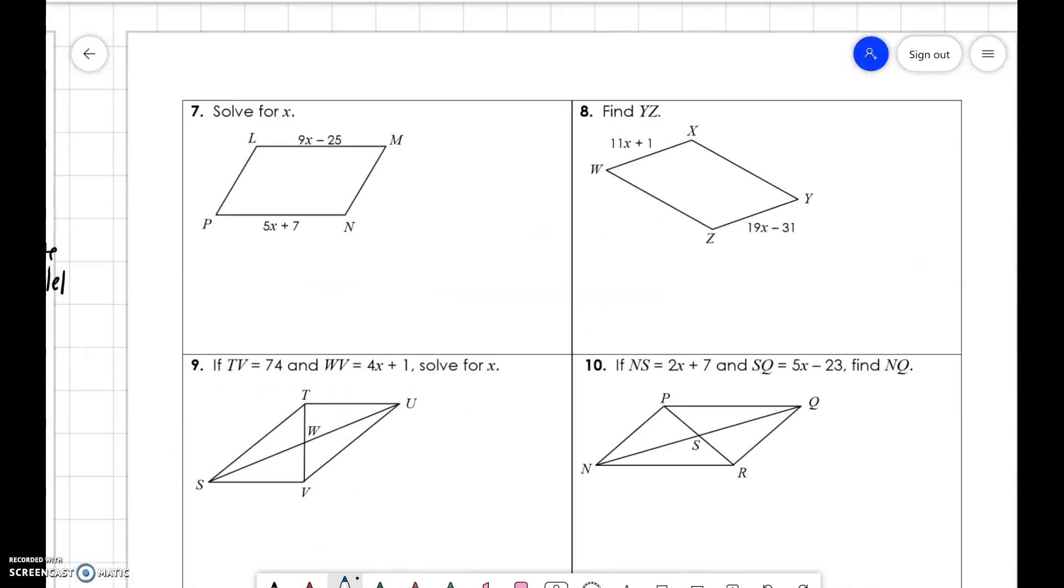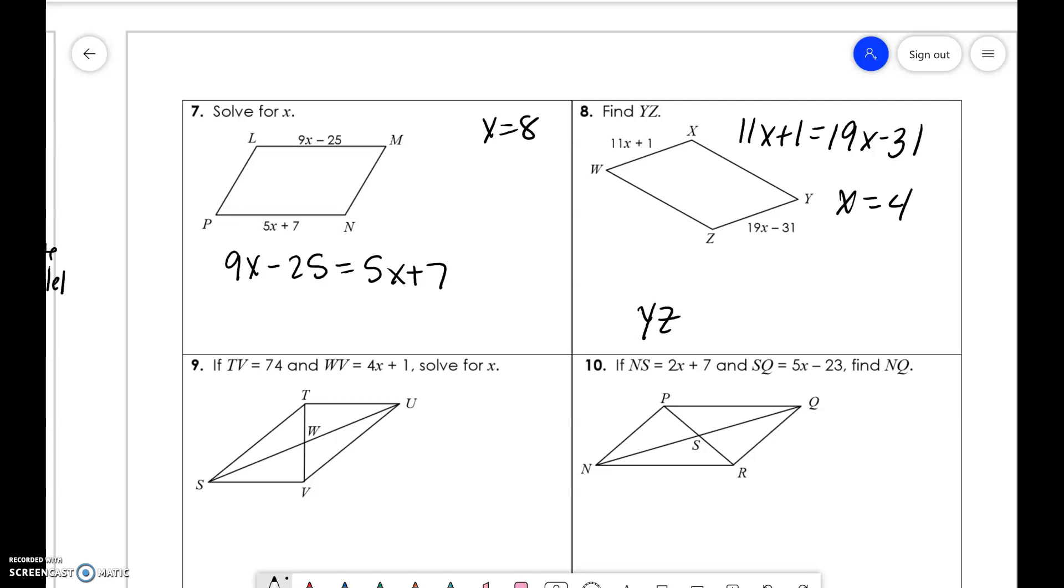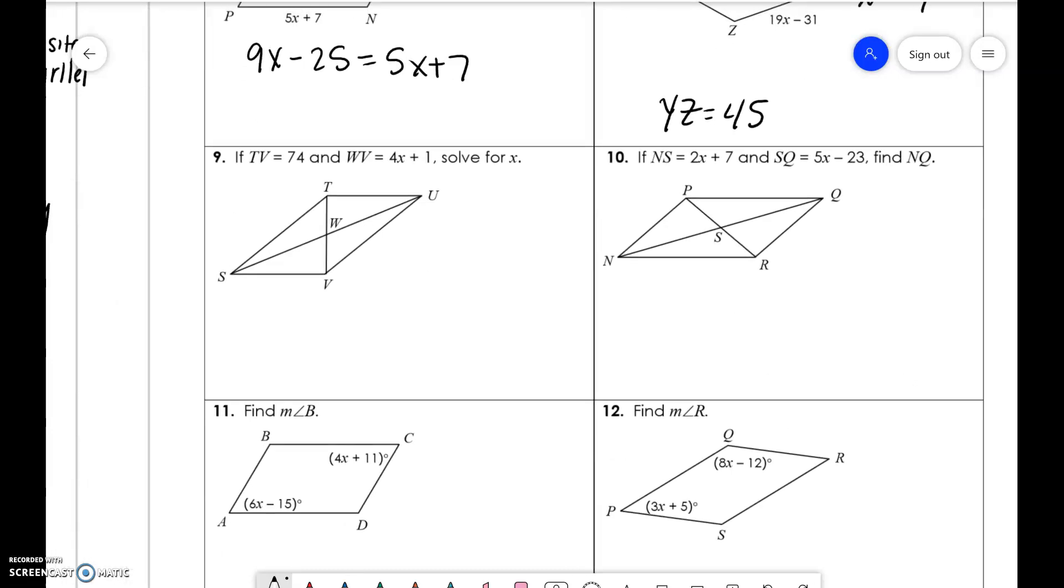Okay. Now we're going to be just doing a little bit of algebra. I'm not going to solve all of these. I'm just going to set it up because I know that we know how to solve algebra. So opposite sides are equal. So 9X minus 25 is equal to 5X plus 7. If you solve that, you're going to get X is equal to 8. Same thing over here. You're going to do 11X plus 1 is equal to 19X minus 31. You get X is equal to 4. When you plug it in, you're going to get YZ is equal to 45.